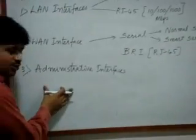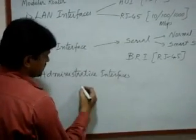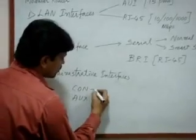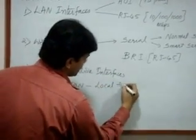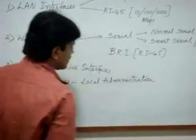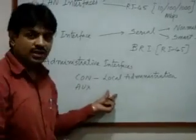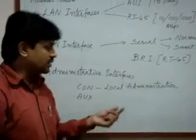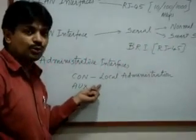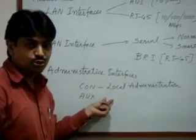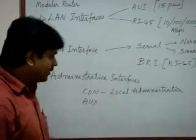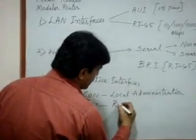Next we have administrative interfaces, which are of two types: the console port and the auxiliary port. The console port is for local administration — for initial configuration of a new router and for advanced troubleshooting. The auxiliary port is for remote administration, allowing us to access, maintain, and troubleshoot the router remotely.